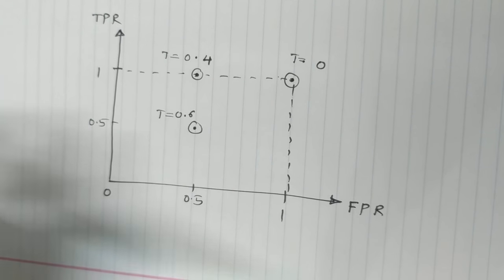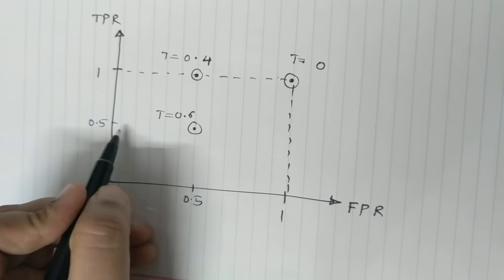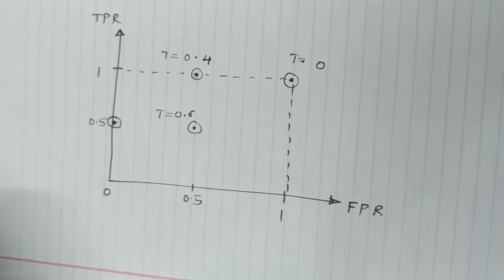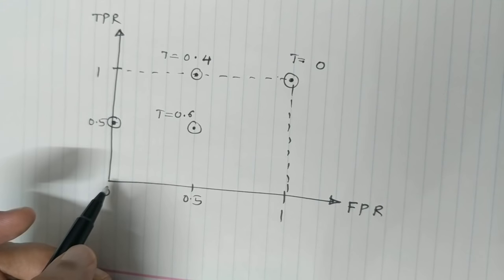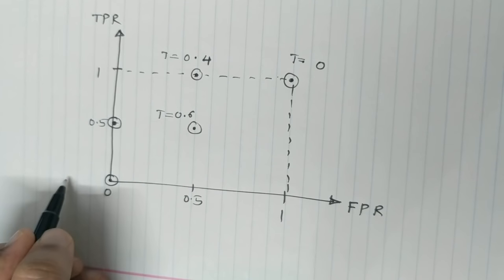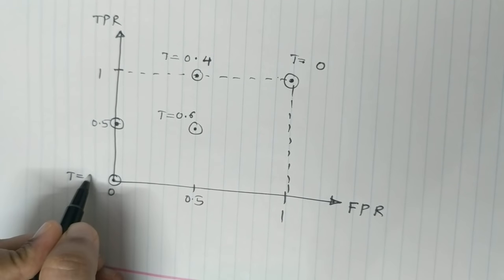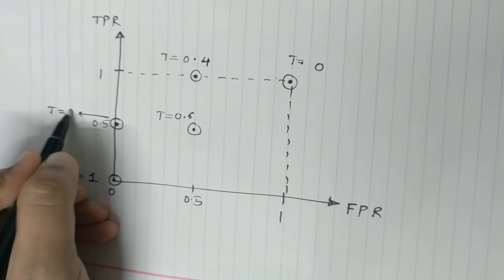Then at threshold 0.8, I have my TPR as 0.5 and FPR as 0. So this value is here. And at threshold 1, my TPR and FPR are 0 and 0. So this is at threshold 1, this is at threshold 0.8.